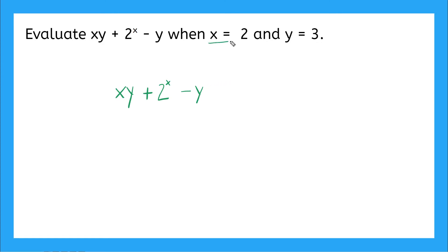Well, I have my given values for x and y. So I'm going to do substitution. Anywhere I see an x, I'm going to replace it with a 2. Anywhere I see a y, I'm going to replace it with a 3. So I'm going to use my parentheses here. x is 2, y is 3, plus 2 to the power of x, which is 2, minus y, which is 3. Perfect.